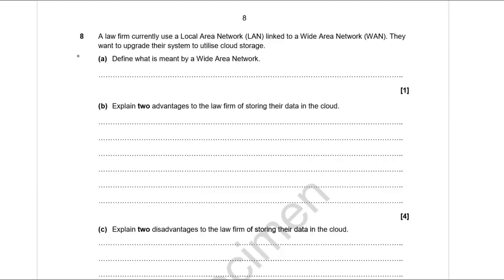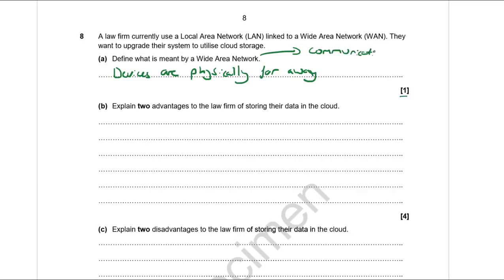Question 8: a law firm uses a local network linked to a wide area network and wants to upgrade to cloud storage. A wide area network is defined by two parts: devices are physically far away from each other, and they share a communication medium — i.e., cables owned by an ISP, a government, or a private citizen — whereas in a local network you own all the cables yourself.